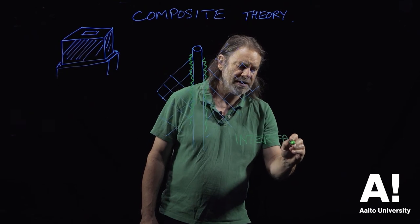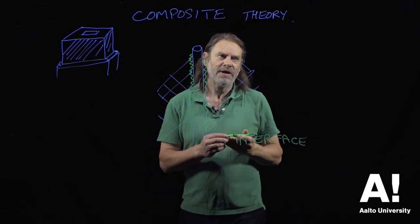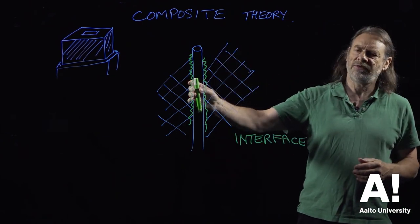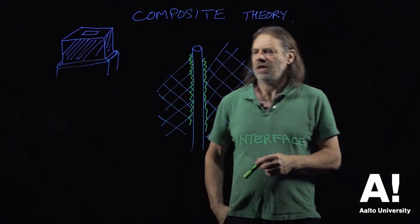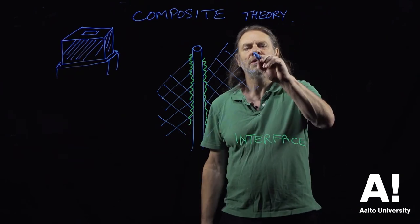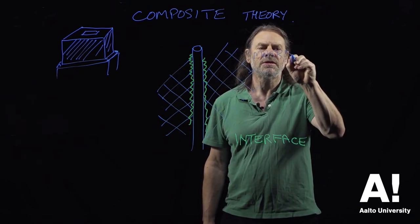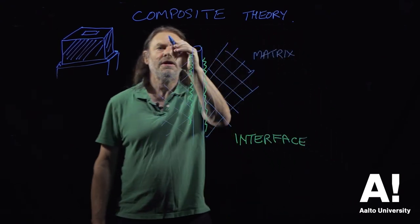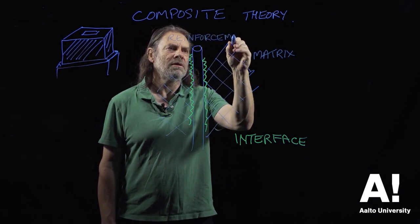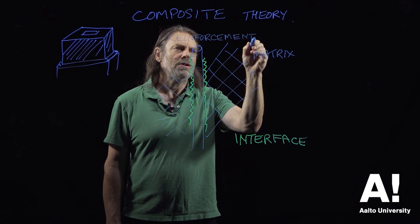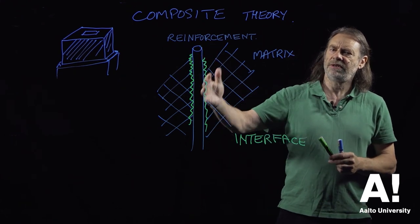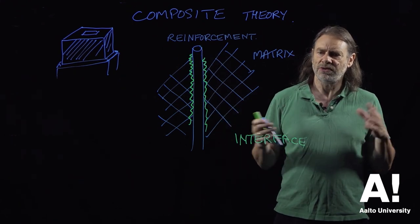And in order to understand what is happening when we try and break a composite, we have to understand what is happening at the interface between the matrix and the reinforcement. So the matrix is what is drawn here as a cross—it's this cross-linked lignin network—and then we have the reinforcement, which is the cellulose fibril. And obviously at the interface we have this hemicellulose-rich region.